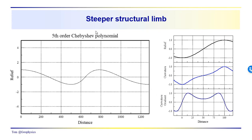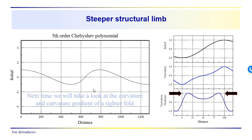What we're going to do next time: we'll use a fifth order Chebyshev polynomial. You can see that we do have a steeper limb over here with more shallowly dipping limbs on the anticline and up-dip from the syncline. Maybe we can make this work and get a result that's a little bit different than what we got for our sinusoid, where we have a saddle sitting over the inflection point. Can we bring these two peaks together into a single large peak? Next time, we'll take a look at the curvature and curvature gradient of a tighter fold using this fifth order Chebyshev polynomial.